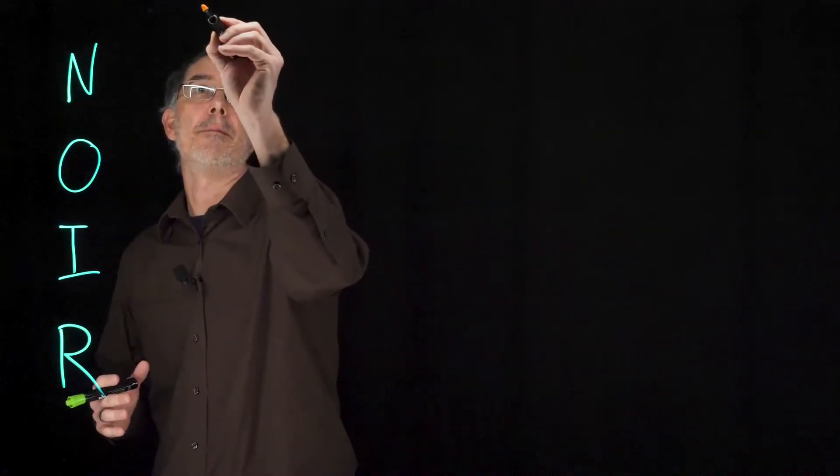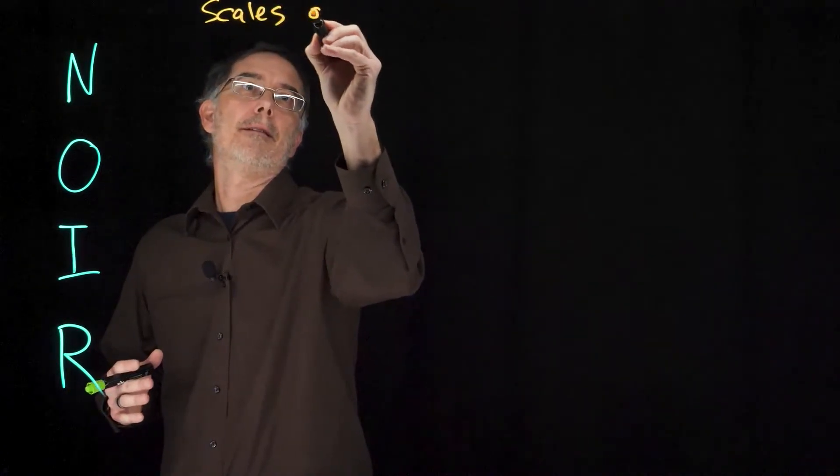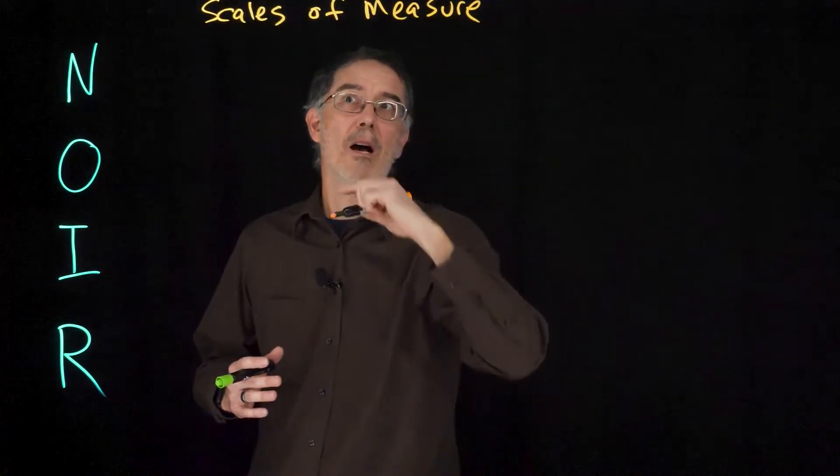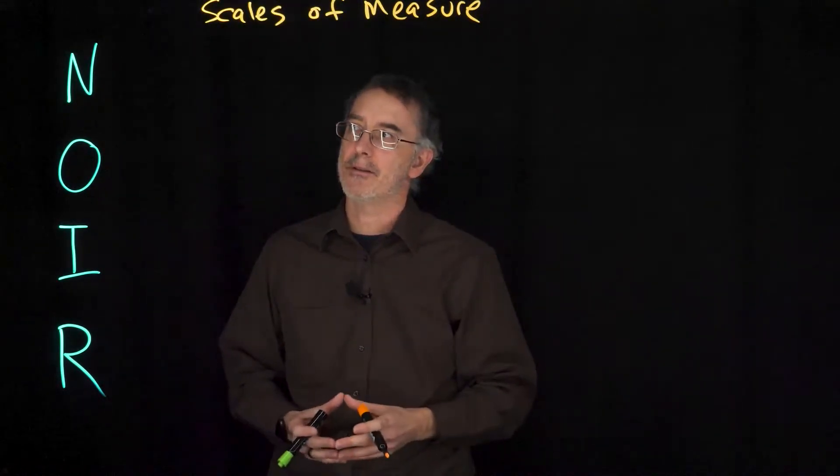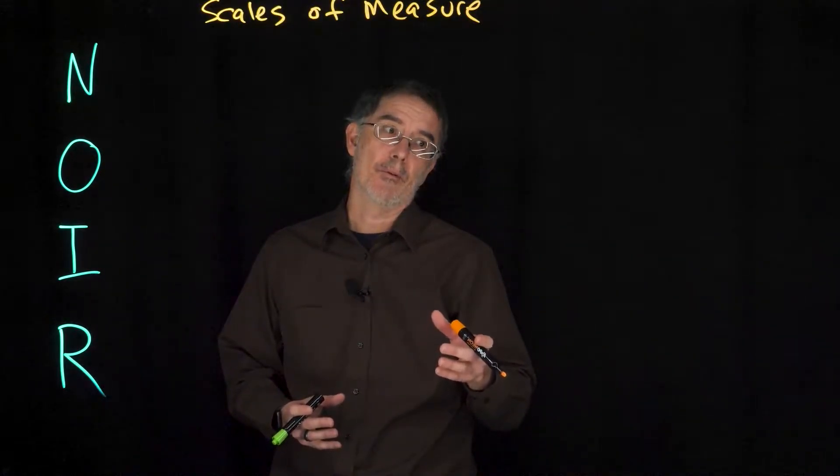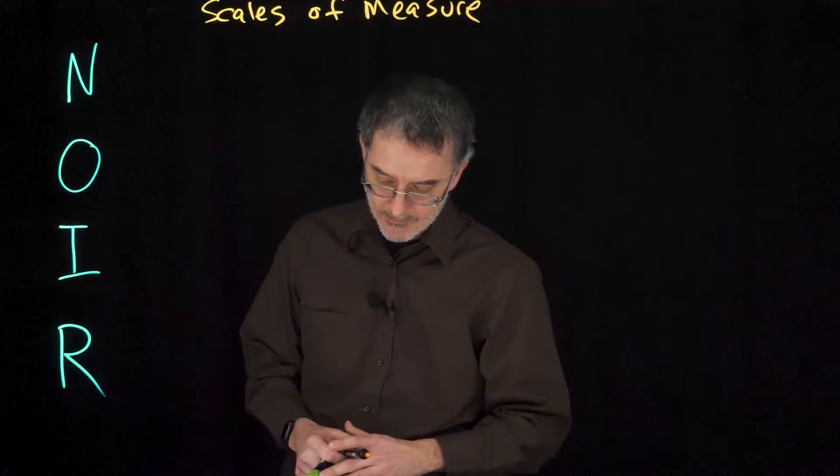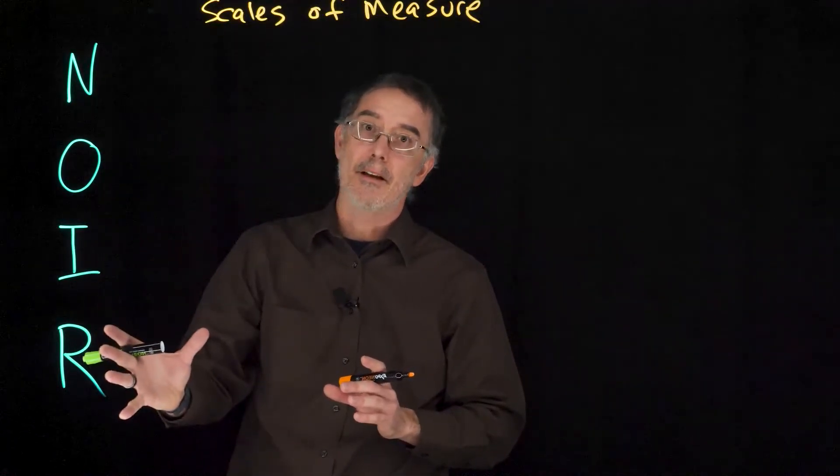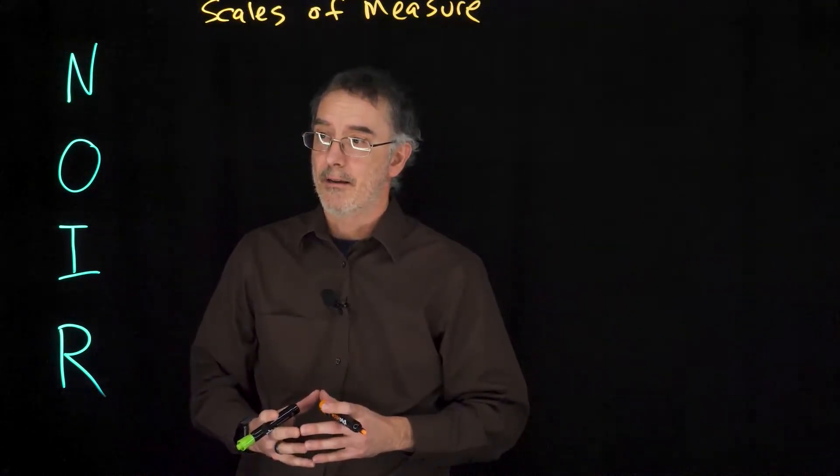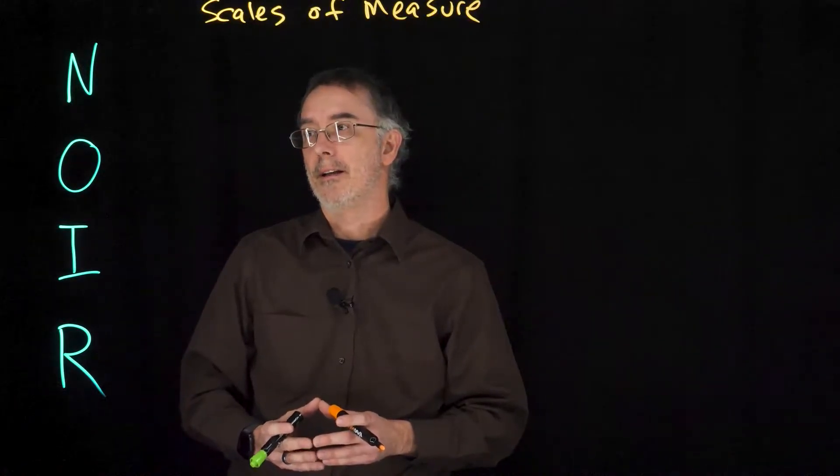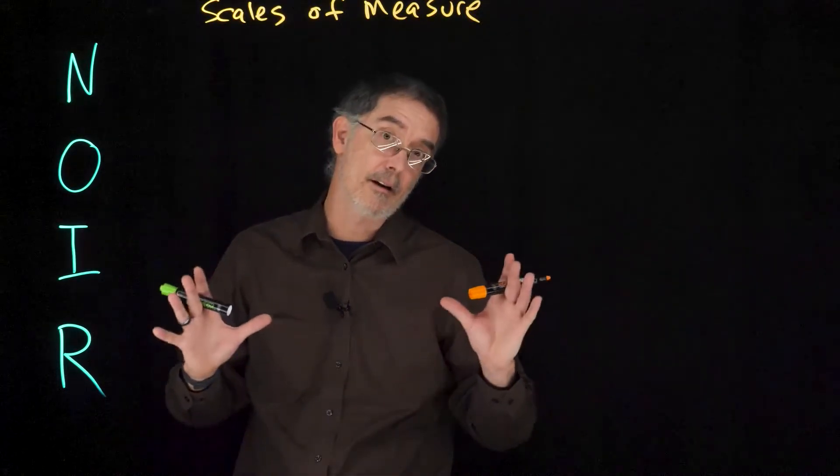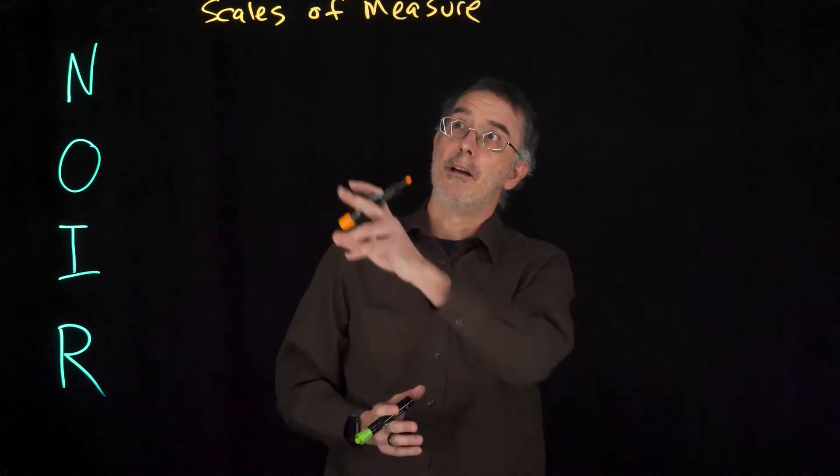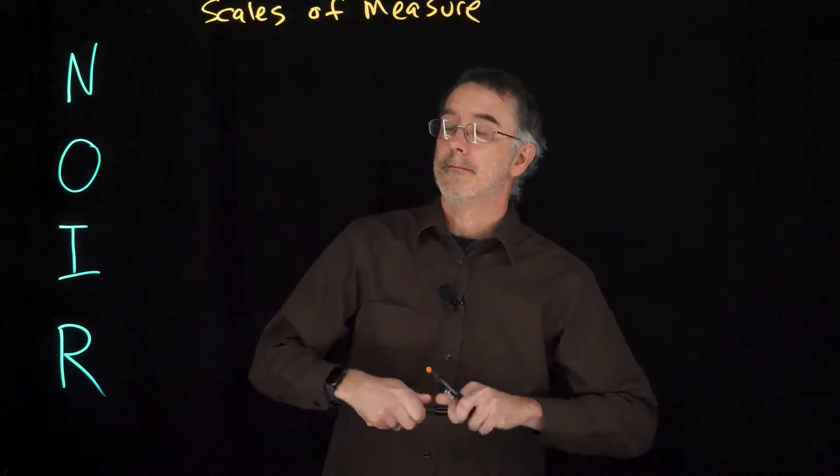This characteristic of variables is sometimes called the scales of measure. Sometimes it is called the levels of measure. There are a few different ways that folks describe these. I am going to describe the way that we most commonly do it in psychology. Here is an acronym that will hopefully help you remember these scales of measure. There are four of them that we are going to use. N-O-I-R is French for Black Noir. It is a film genre. That is like the dark and spooky movies like Blade Runner. But it is also the first four letters of the four scales of measure.